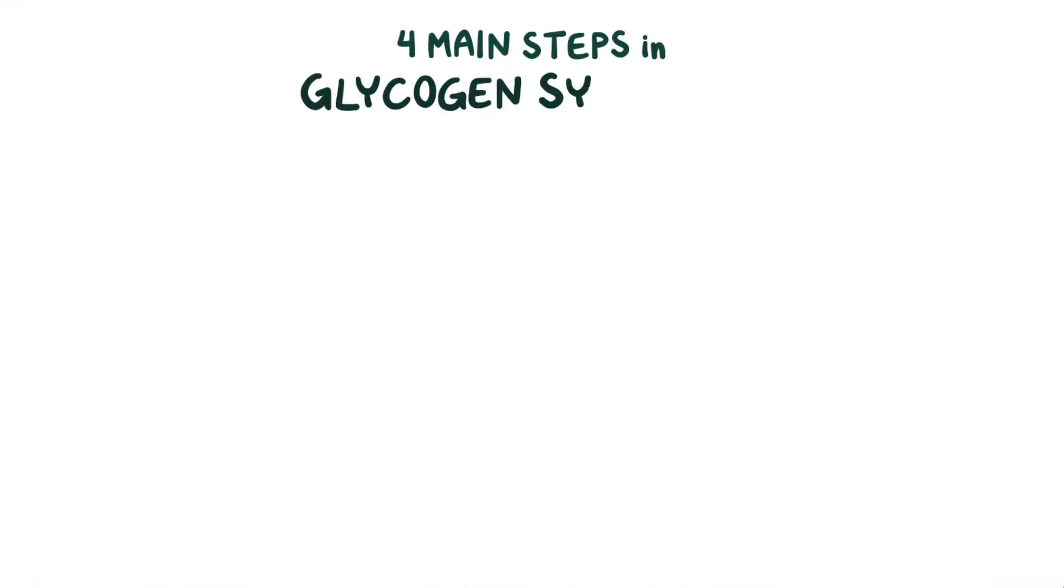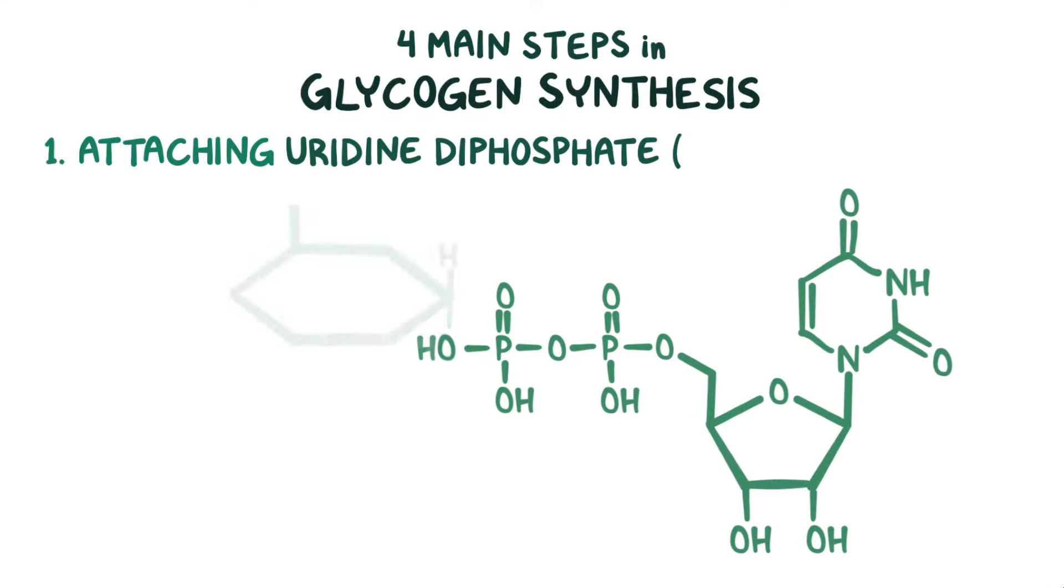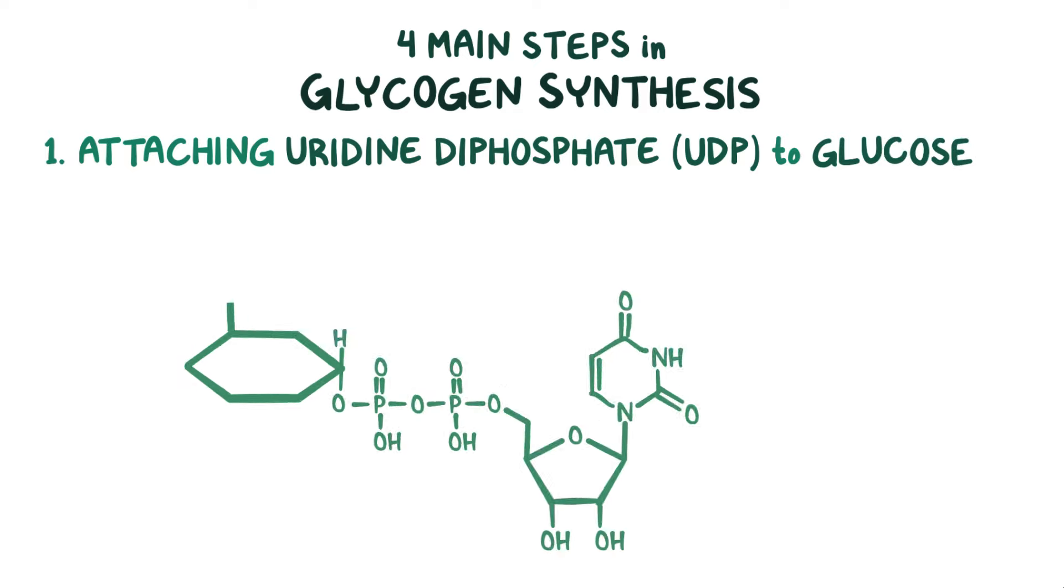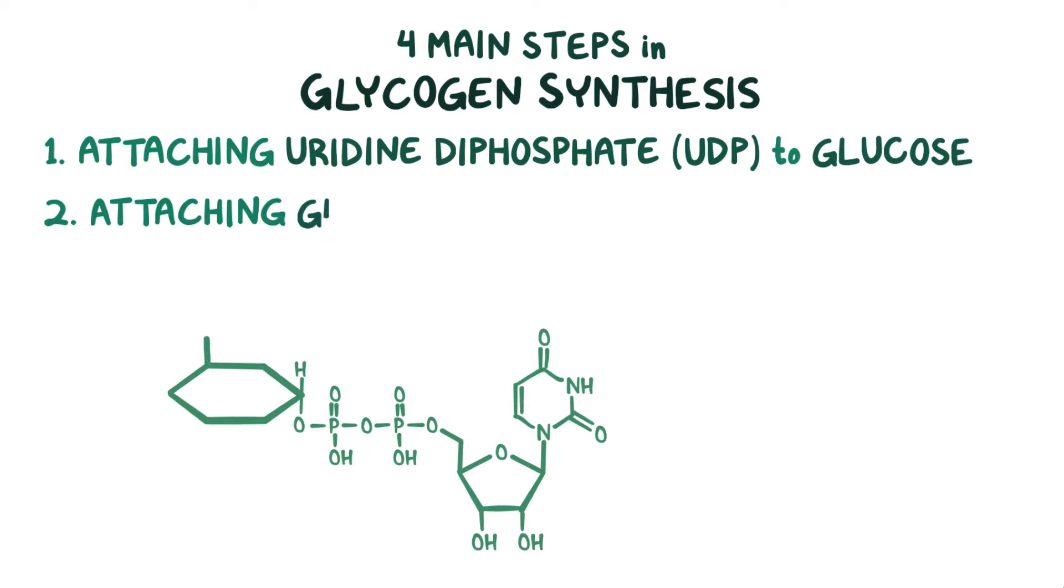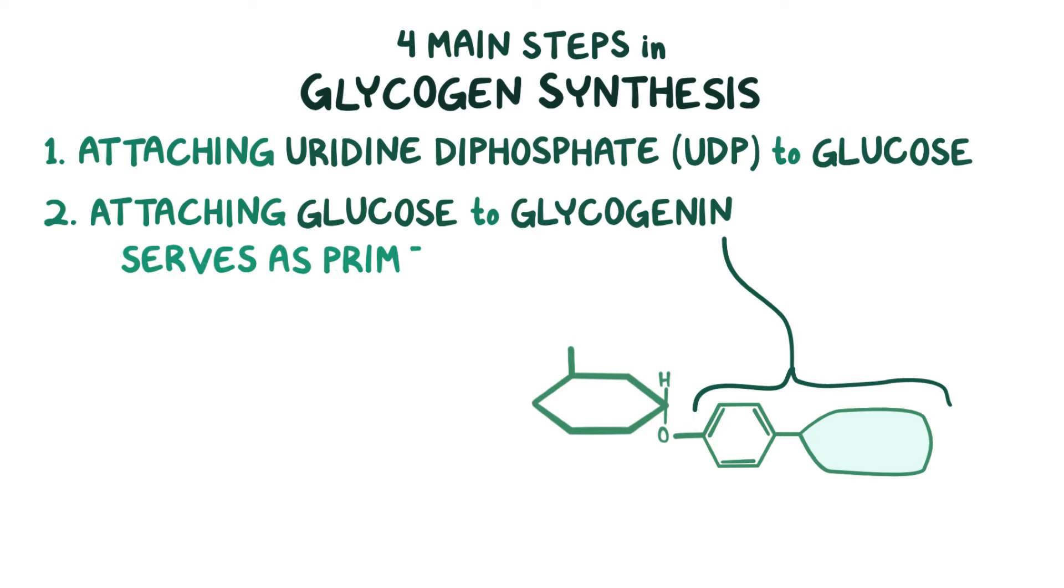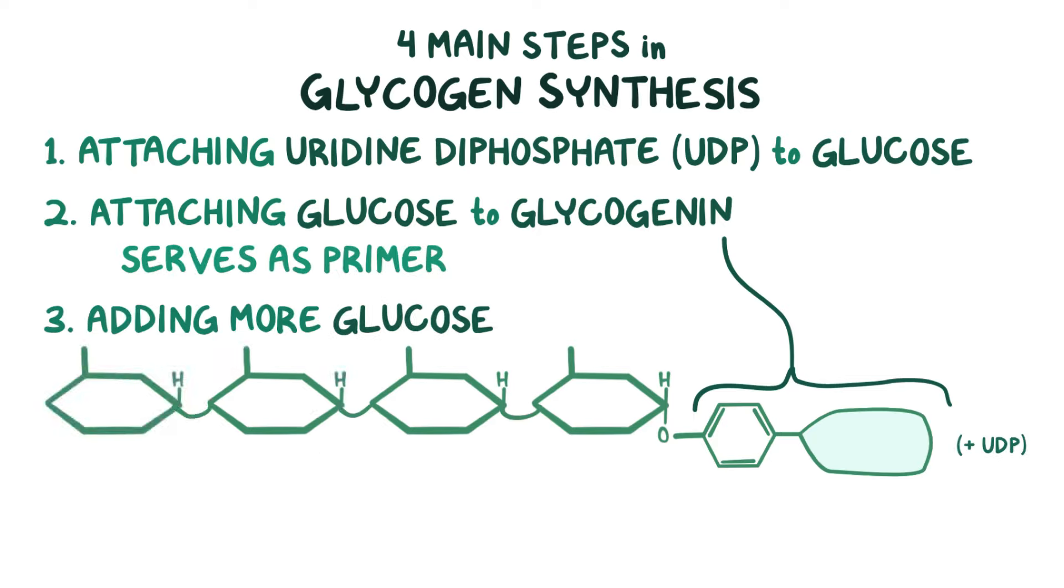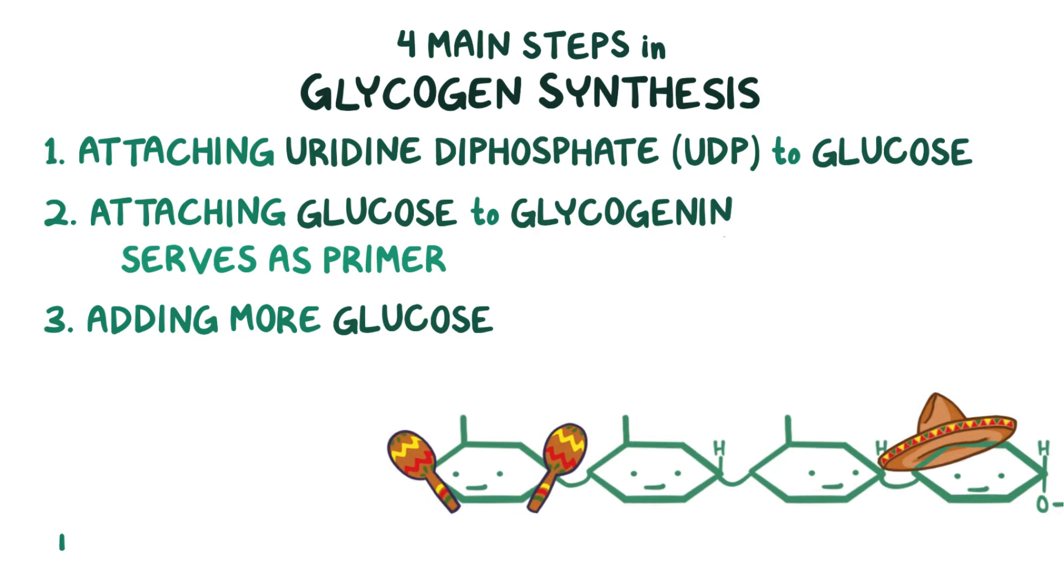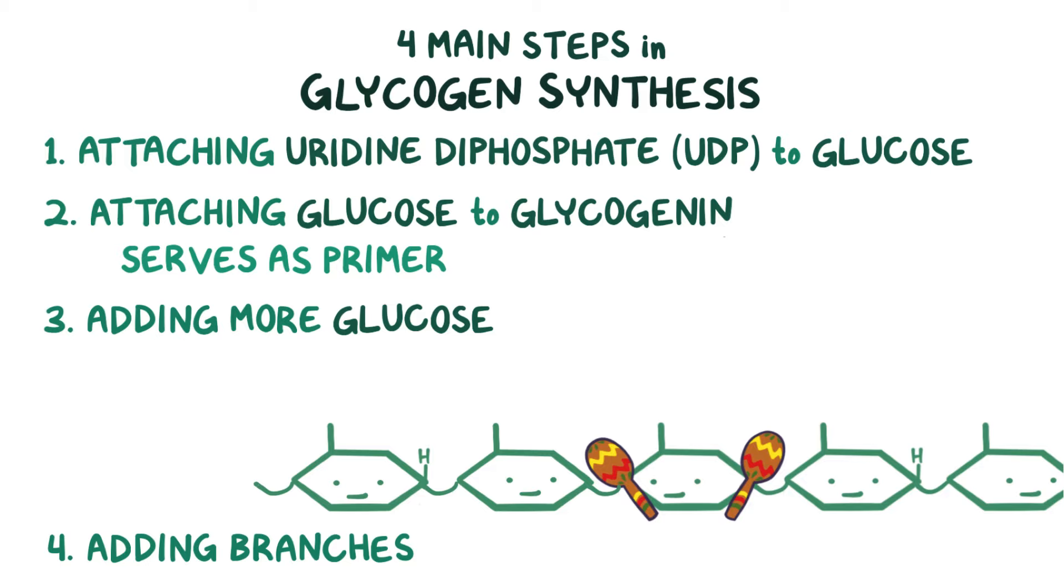There are four main steps in glycogen synthesis. First is attaching a uridine diphosphate, or UDP, molecule to glucose. Second is attaching the glucose part of the UDP glucose molecule to a glycogen primer called glycogenin, forming a short linear glycogen chain, which serves as a primer. Third is adding more glucose molecules to the primer, a bit like forming a conga line. And fourth is adding branches to the glycogen molecule.